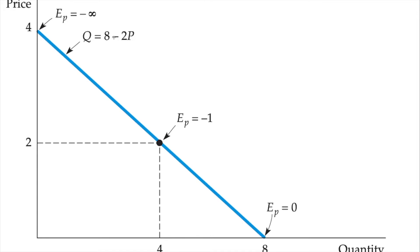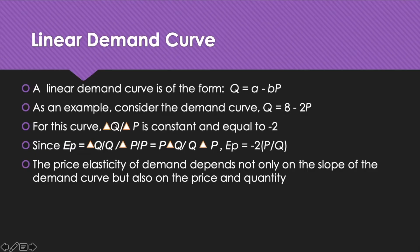For this curve, ΔQ/ΔP is constant and equals −2. We reach this result via simple differentiation: when we differentiate Q with respect to P, that is dQ/dP, we obtain −2. The slope of the demand curve is the ratio of the change in the vertical intercept to the change in the horizontal intercept, which is ΔP/ΔQ or dP/dQ. It is clear that the result dQ/dP is the reciprocal of the slope of the demand curve.